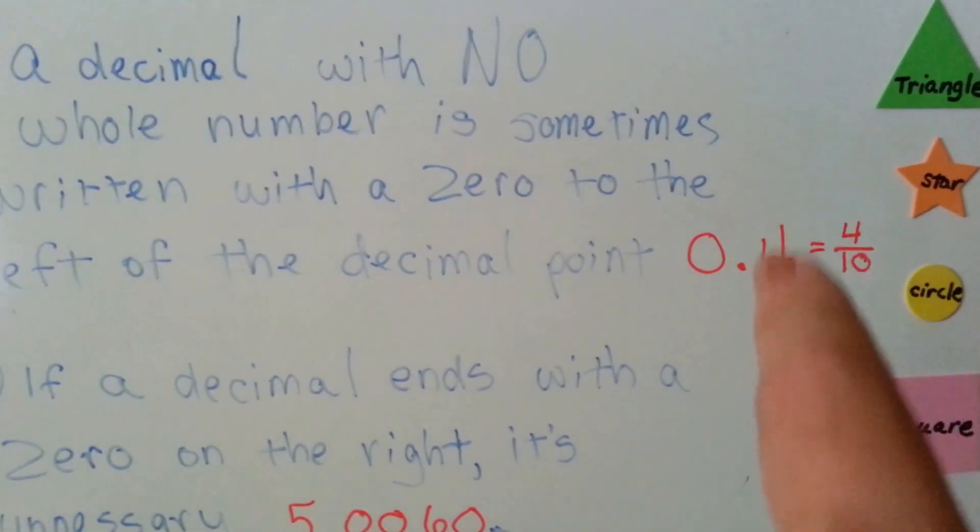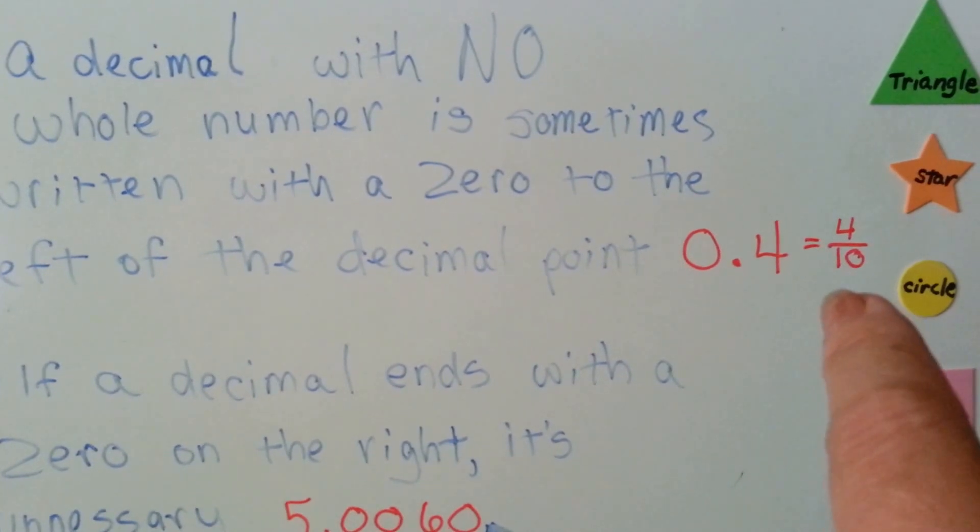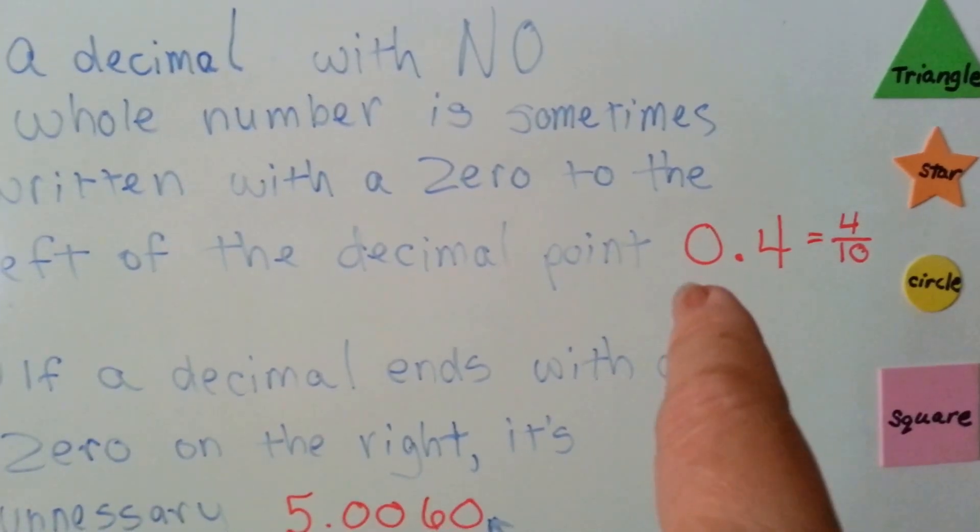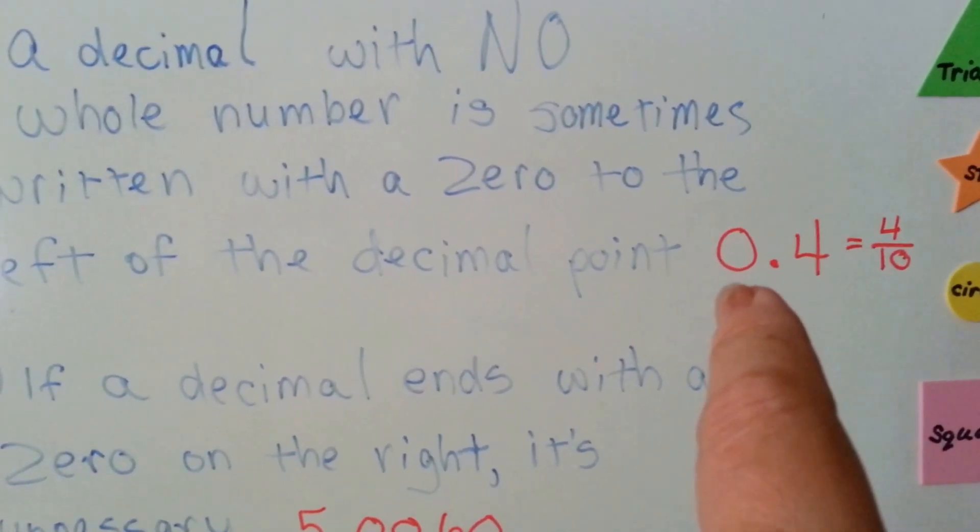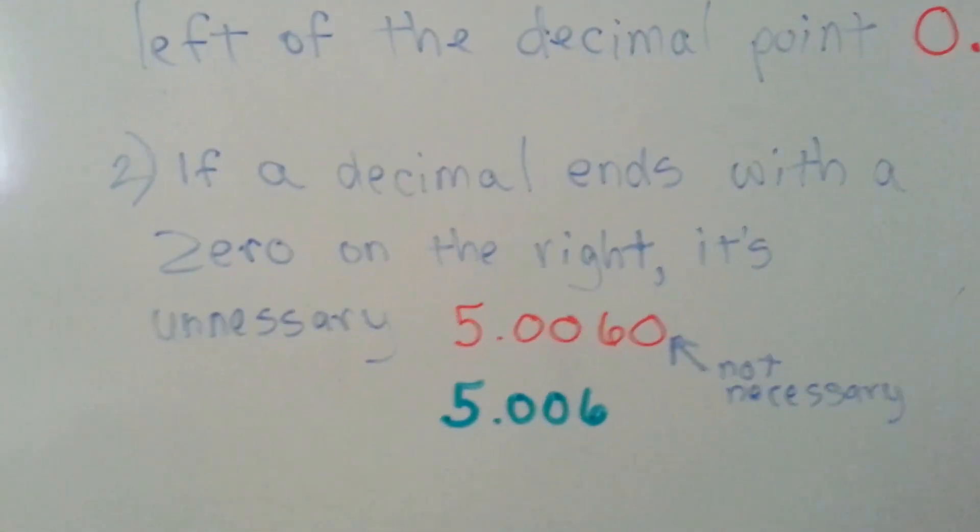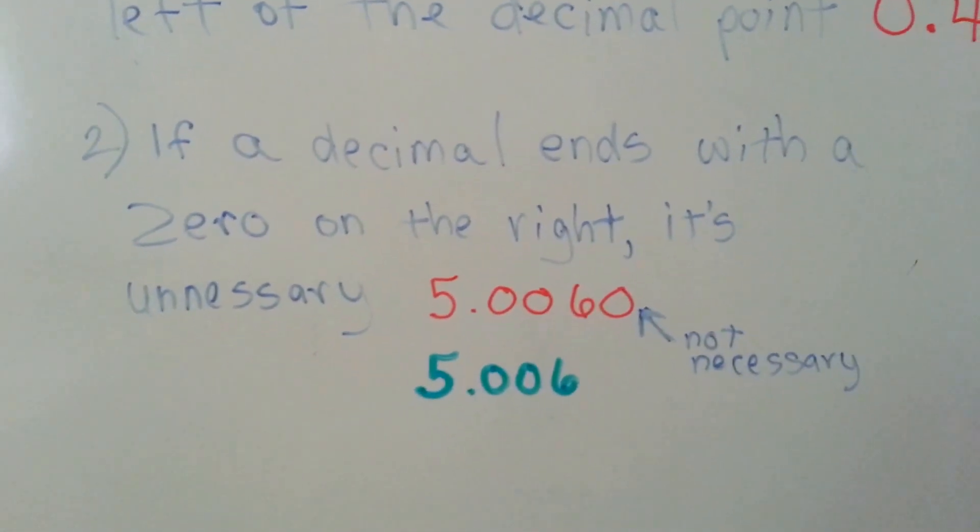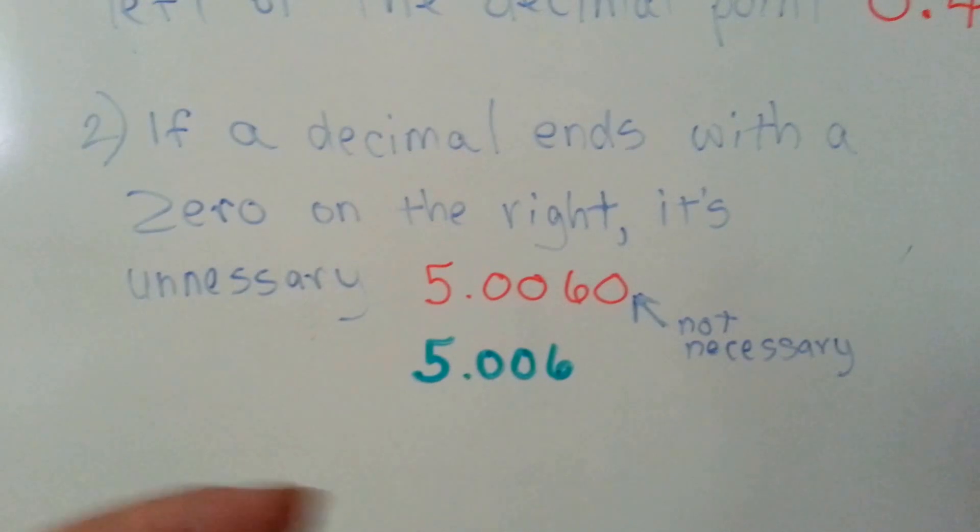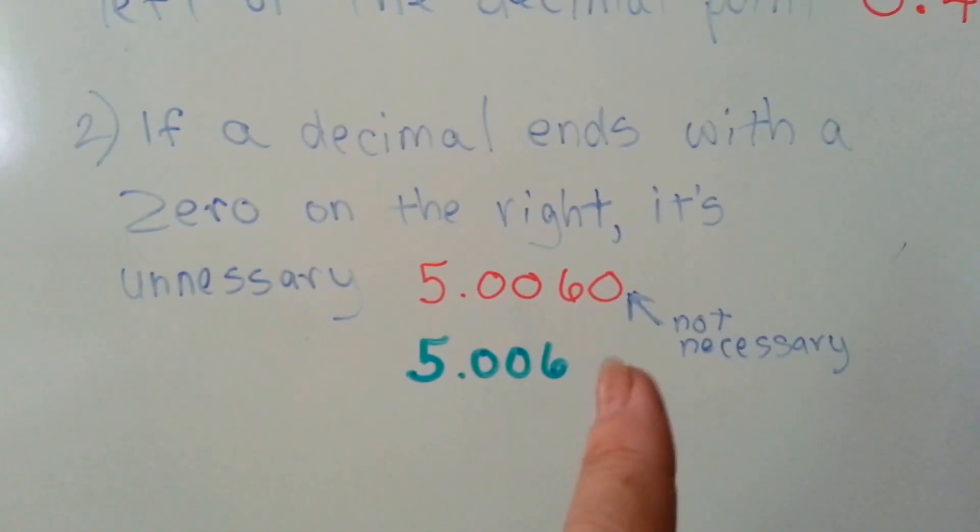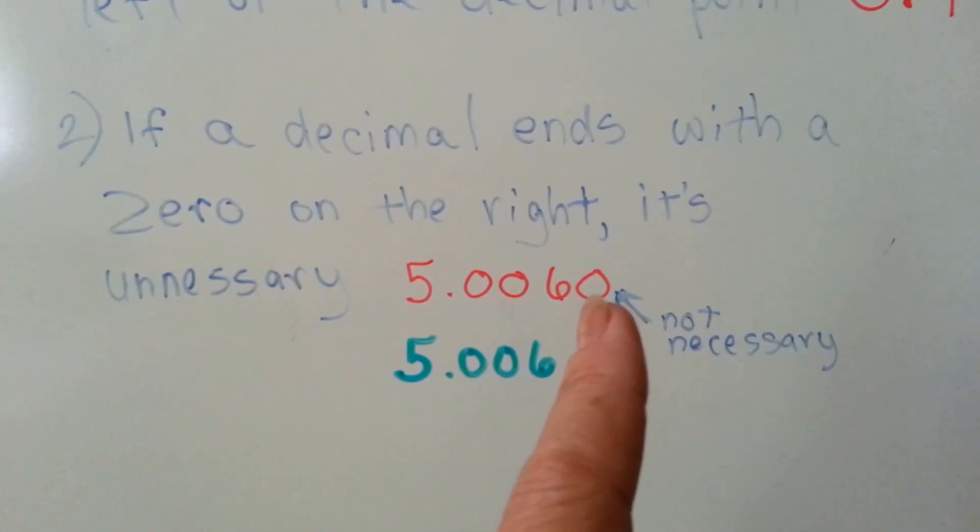The four is in the tenths place, so this would be written as four tenths, and we would ignore the zero that's in the ones place. If a decimal ends with a zero on the right, it's unnecessary. That zero is not necessary.